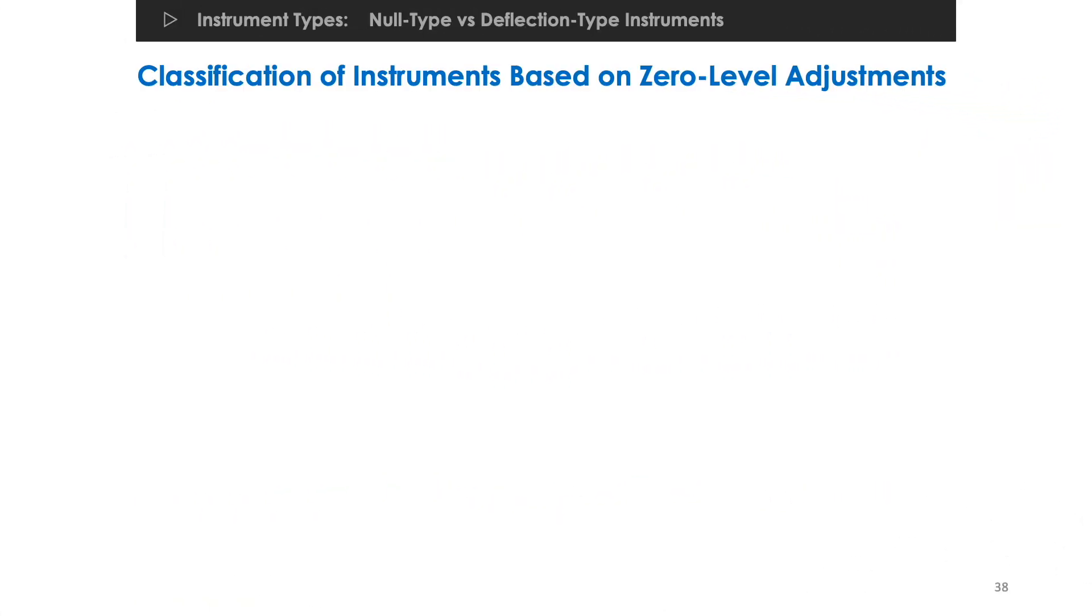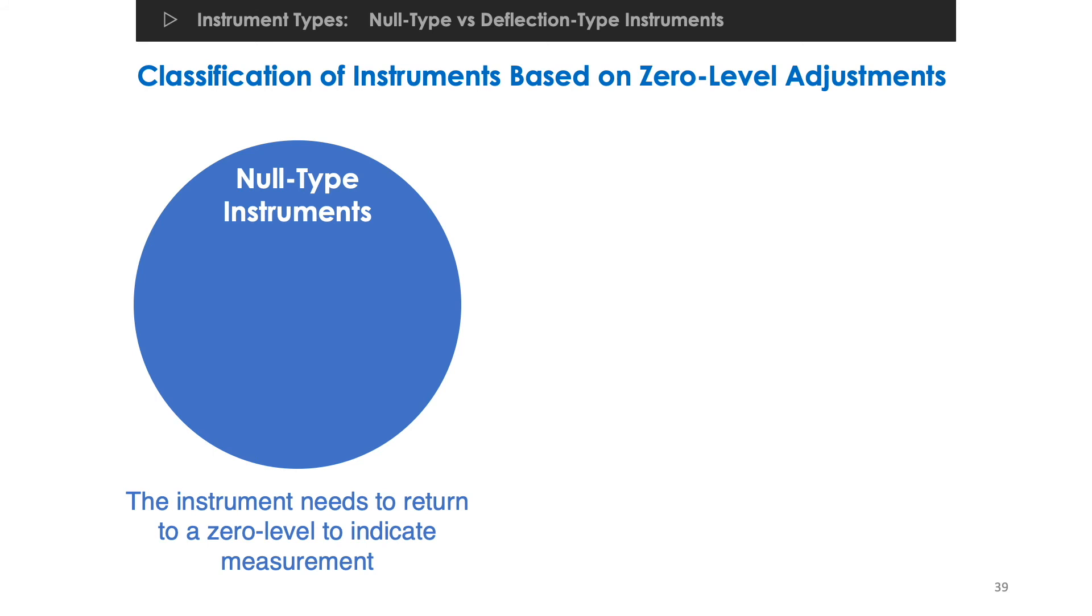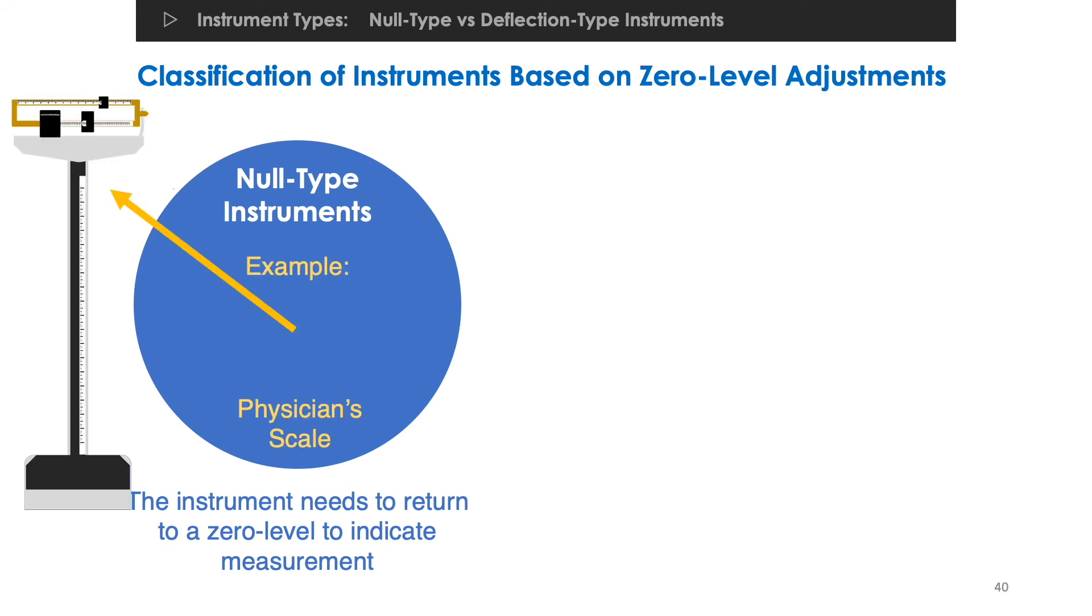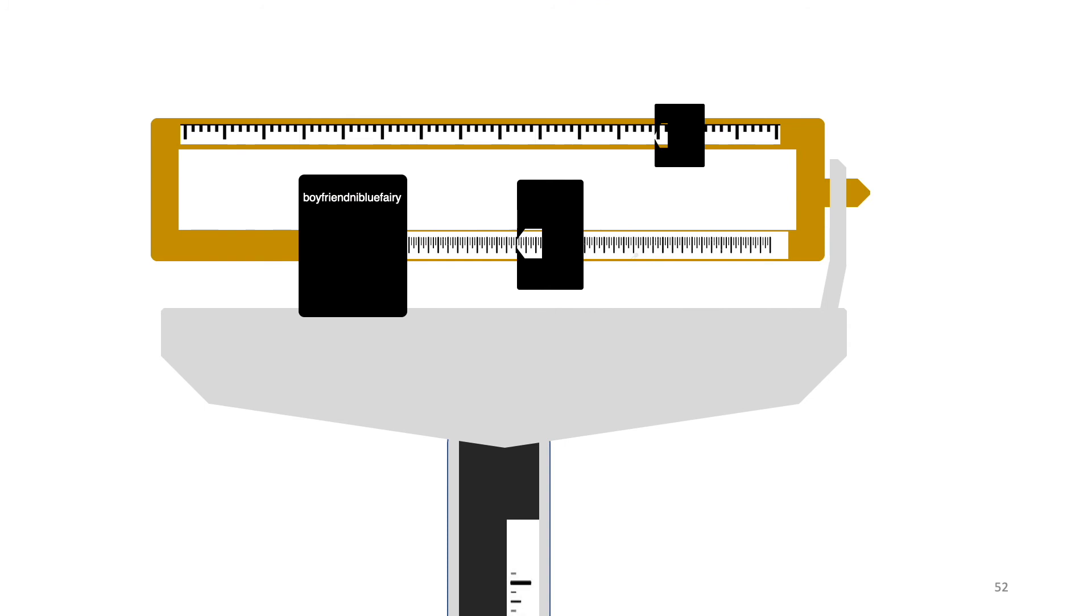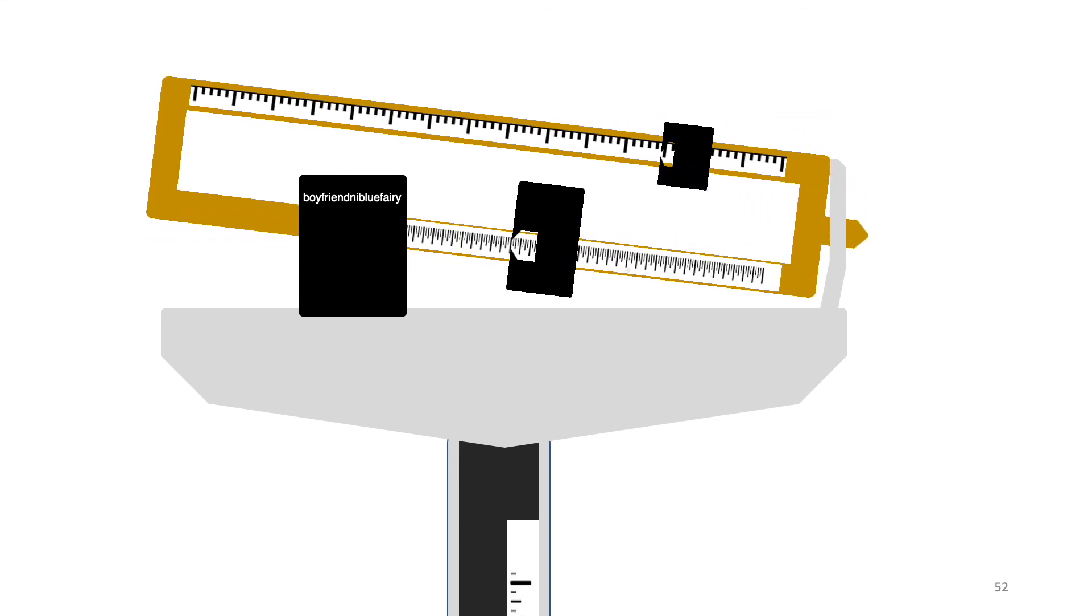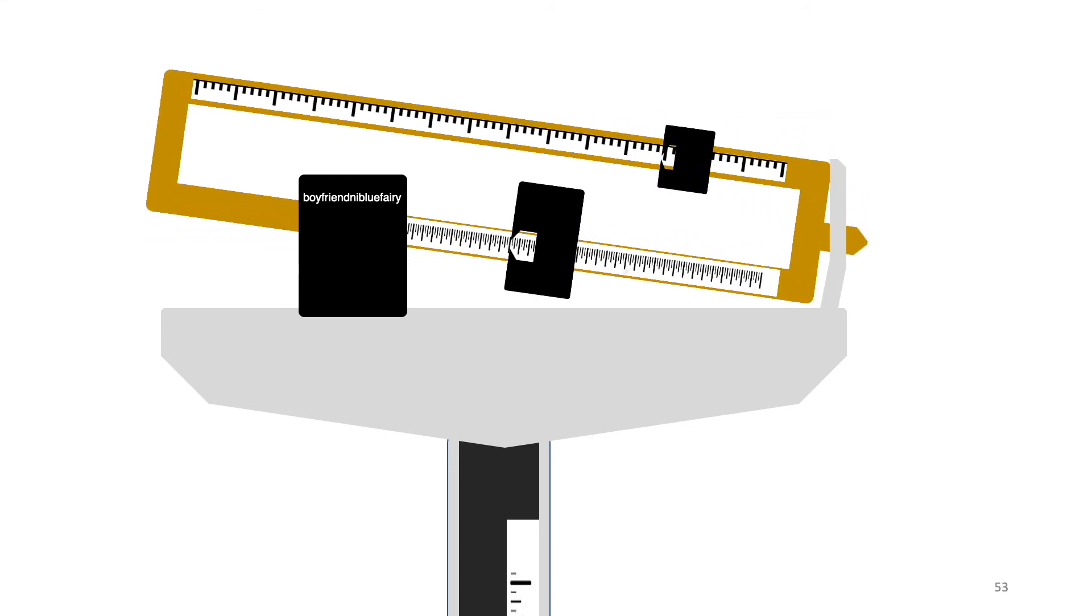Also, instruments can be classified whether there is a need to adjust its moving parts into a zero level or not. A null type instrument is an instrument that needs to return to a zero level mark to indicate a measurement. A good example would be a physician scale. Initially, the instrument's beam is at a zero level or is at a null level. When a person steps on the platform, the beam suddenly falls down.